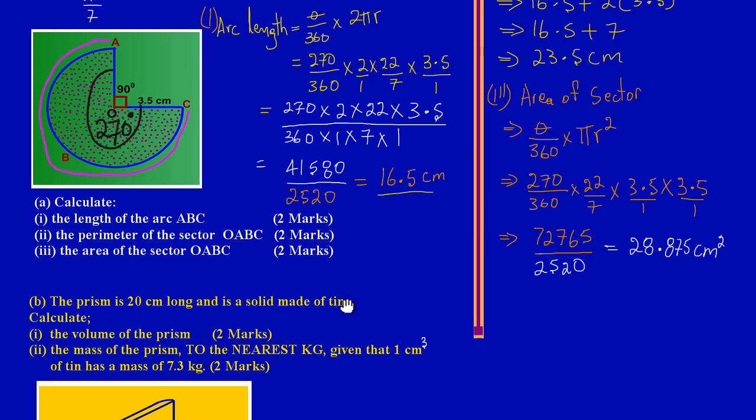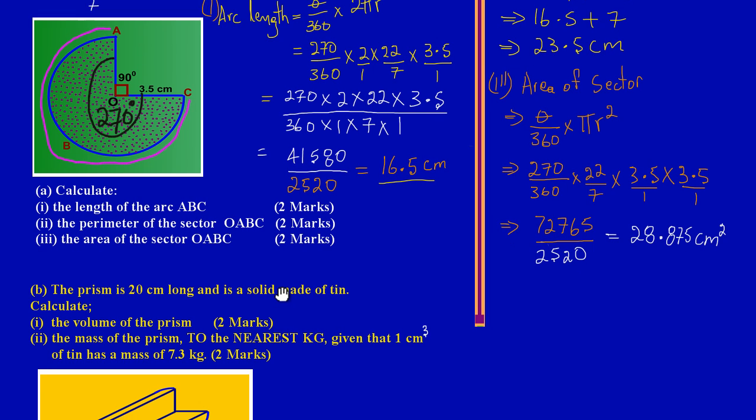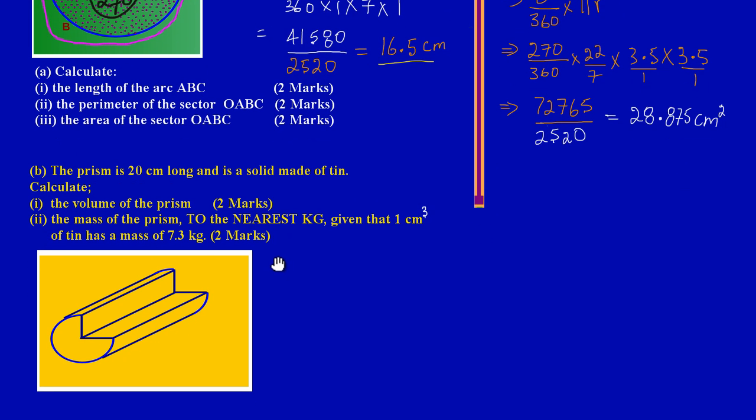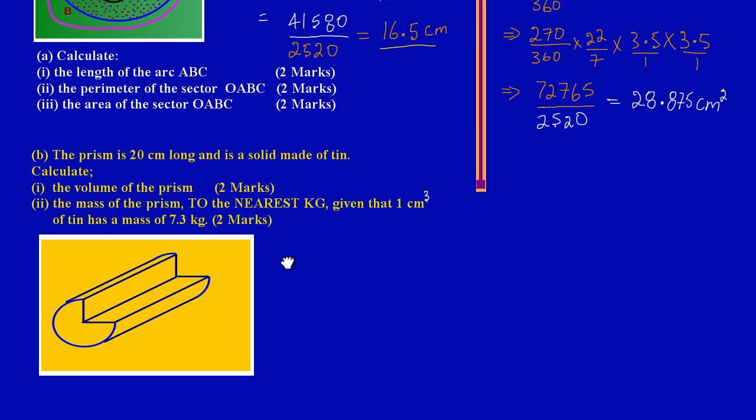If they're going to ask us to calculate the volume of the prism, it simply means we're going to take the area of the cross-section that we calculated, 28.875, and multiply by the length, which is 20 centimeters.